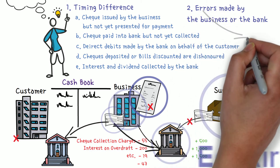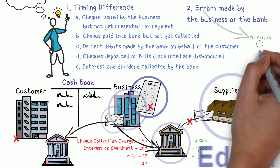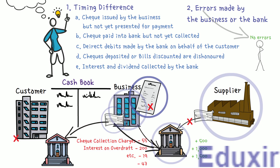The problem does not have any particulars related to errors made by the business or by the bank, so we will not discuss those errors here. In addition, the problem requires an understanding of the concept of bill of exchange. If you are already familiar with the concept of bill of exchange, you can skip this part of the video and directly jump to the analysis of the problem.